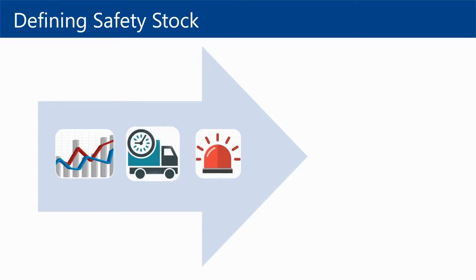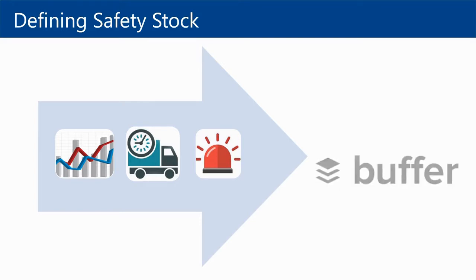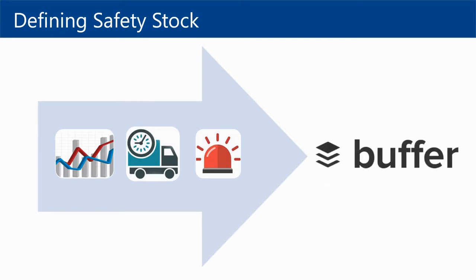Inventory kept in an enterprise usually depends on the demand of the items and the time it takes to procure those items. These factors, however, are subject to uncertainty because demand can vary due to unexpected or unforeseen customer behavior, or perhaps the lead time varies because of unplanned interruptions. These variabilities need to be buffered by ways of safety stock.